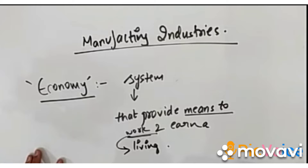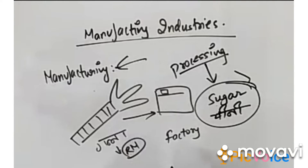Organizations, factories, shops, mines — yeh sab mil ke banati hai economy. Now comes the word 'manufacturing.' For example, we grew sugar cane in our field — ganna ugaya — so ganna is the raw material. That sugar cane was sent to the factory and sold. In that factory, processing was done and a new product, sugar, was made.